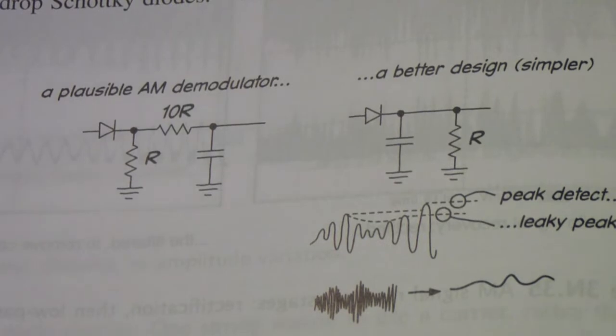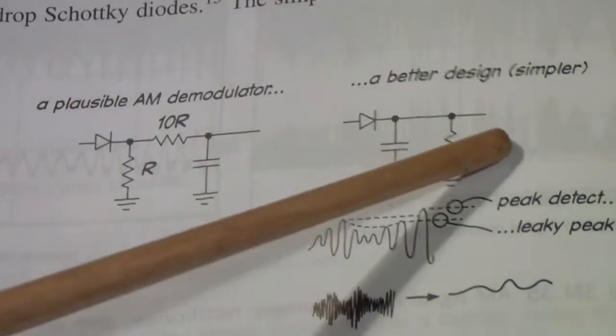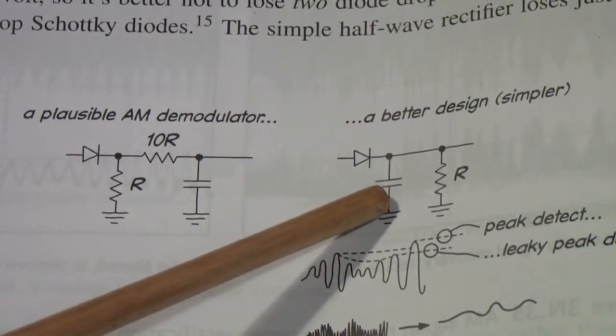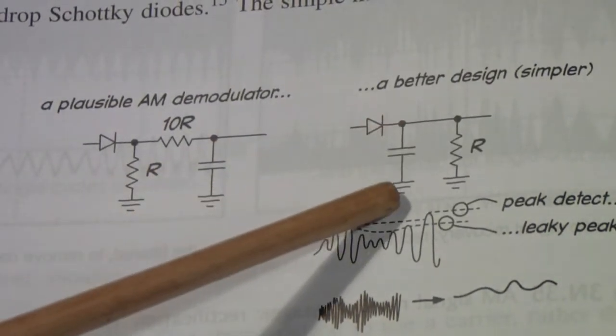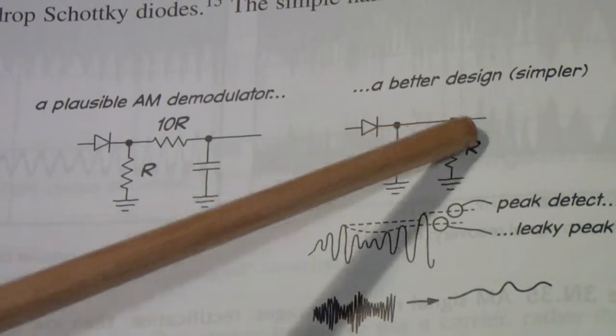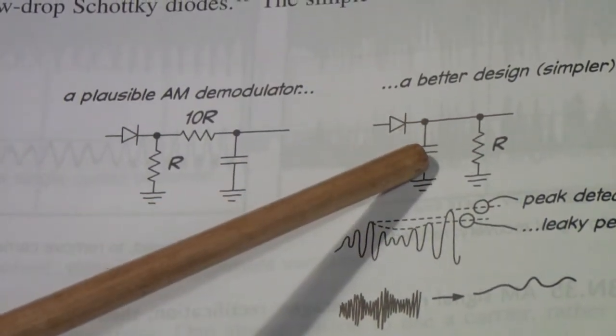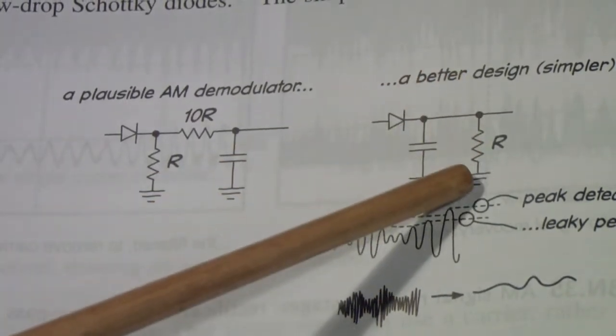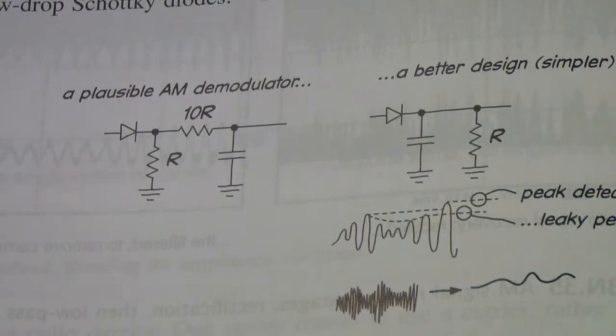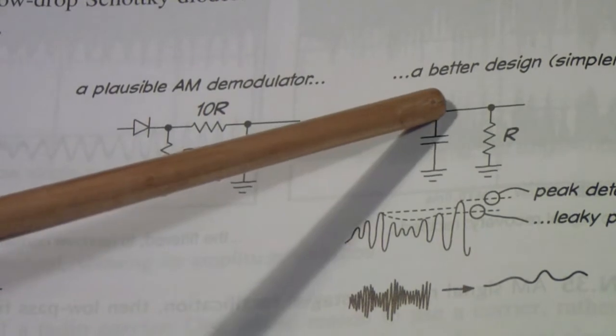It's shown here - it consists of a diode, I'm using a 1N4148, and I'm using a capacitor and a resistor in parallel. The diode charges the capacitor, and when the diode is turned off, the charge on the capacitor leaks off through the resistor.